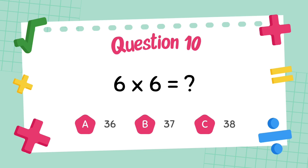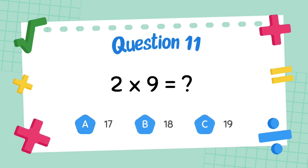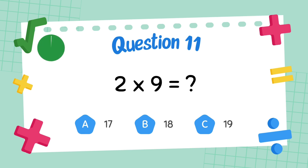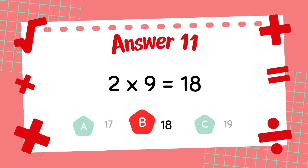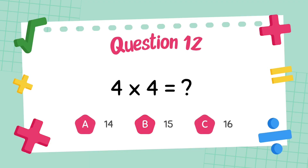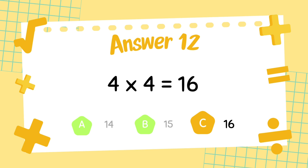What is 6 multiply 6? The answer is 36. What is 2 multiply 9? The answer is 18. What is 4 multiply 4? The answer is 16.